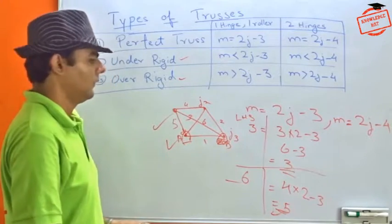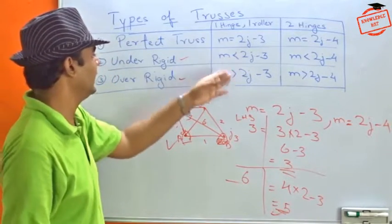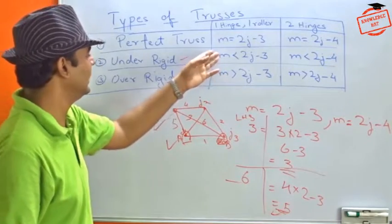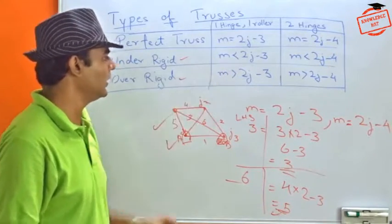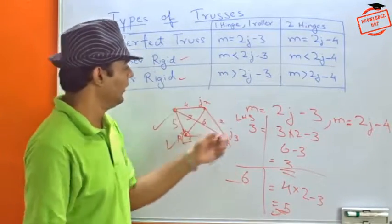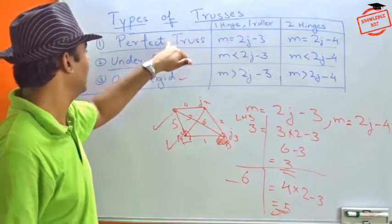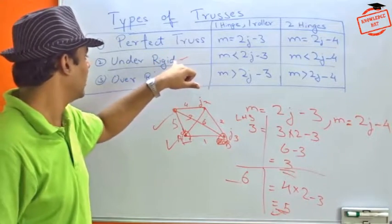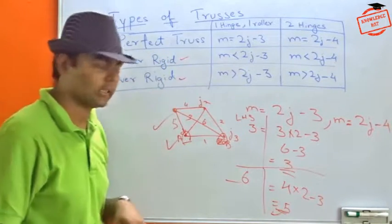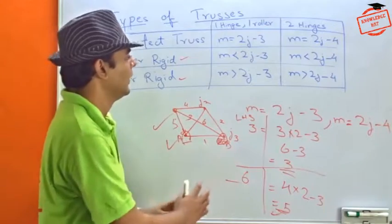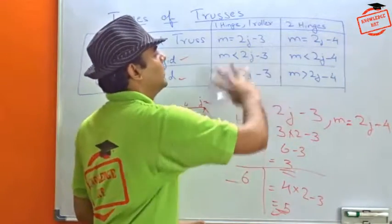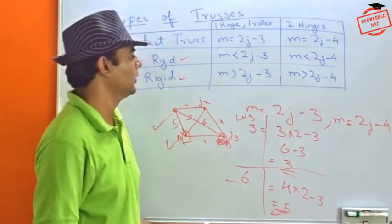But for our understanding, we take these questions, these equations, these formulas also. They can be a question where they will give you a truss and they will ask whether it is a perfectly rigid truss or under-rigid or over-rigid truss. So for those things, for those questions, these formulas will help us to find the solution.